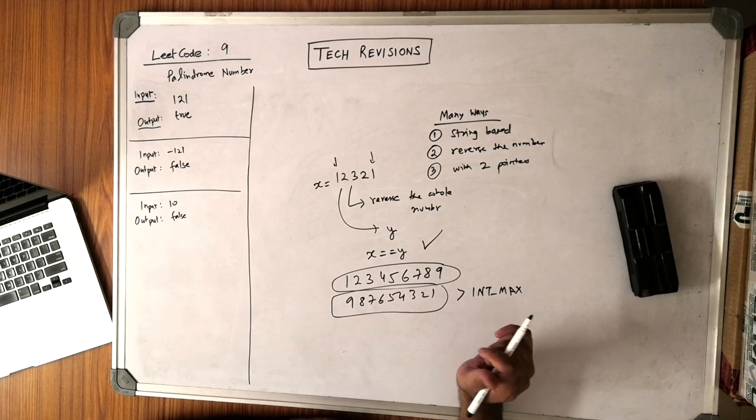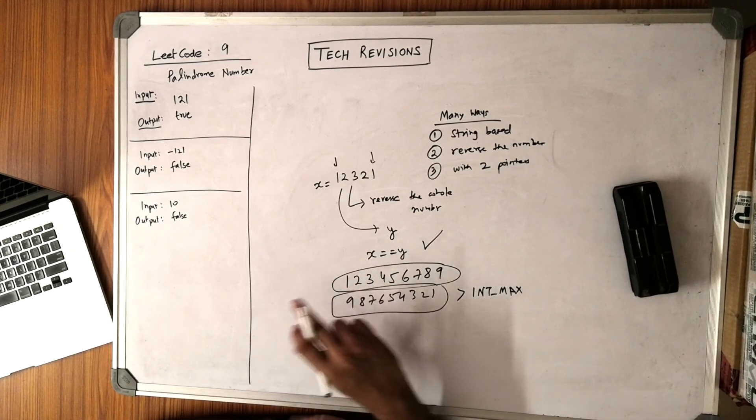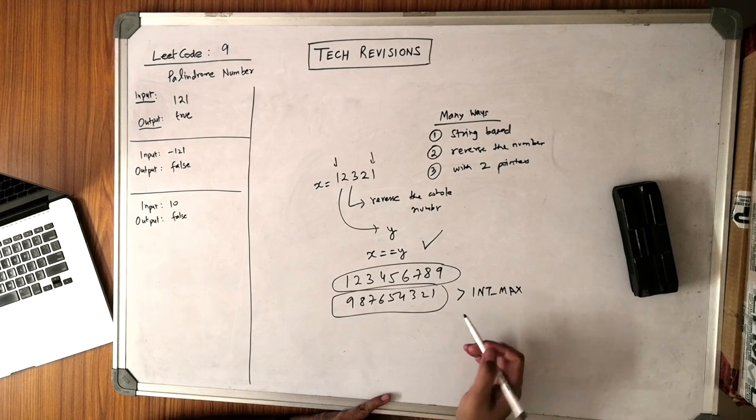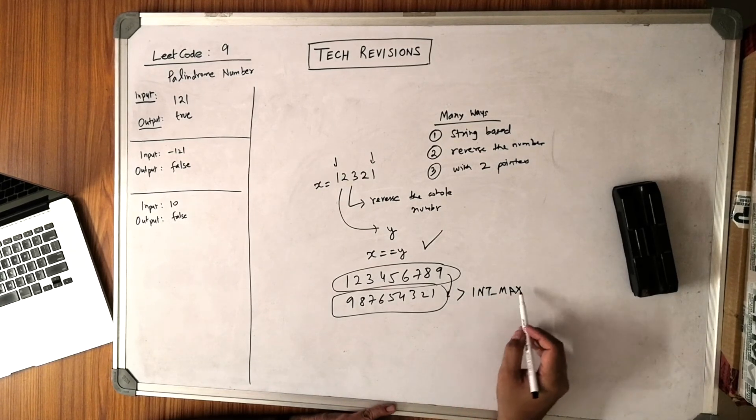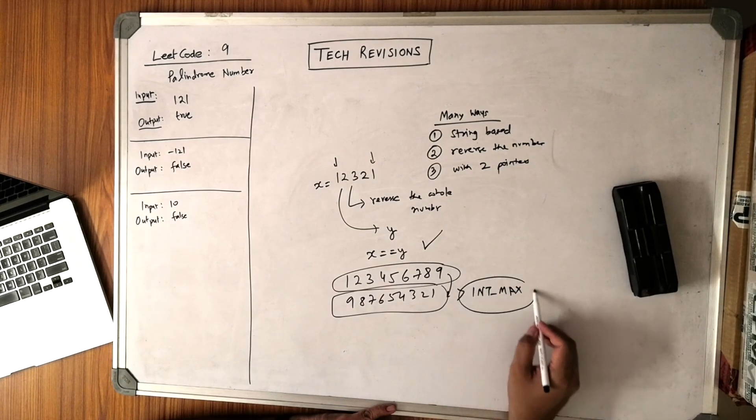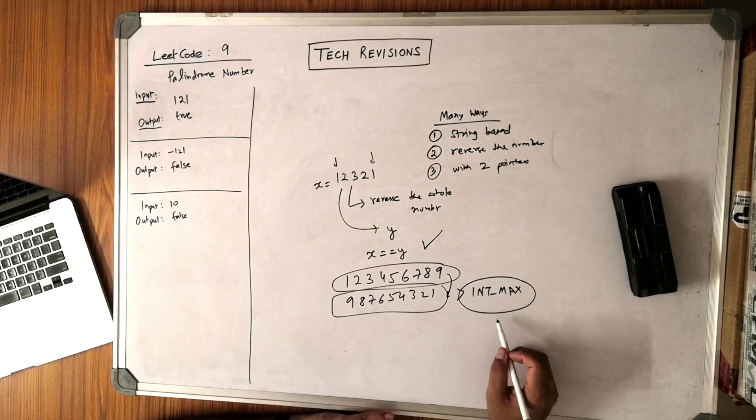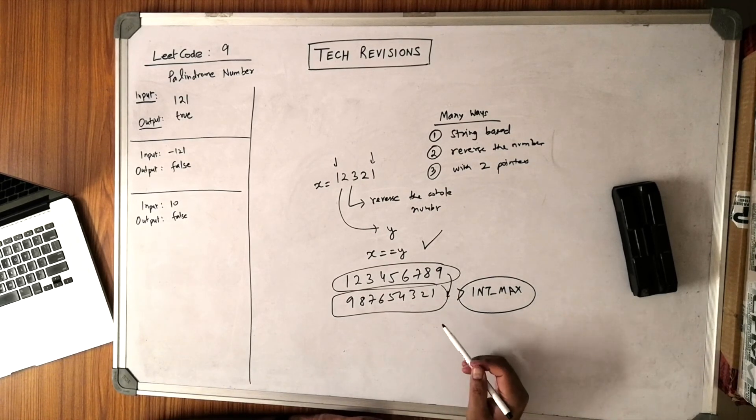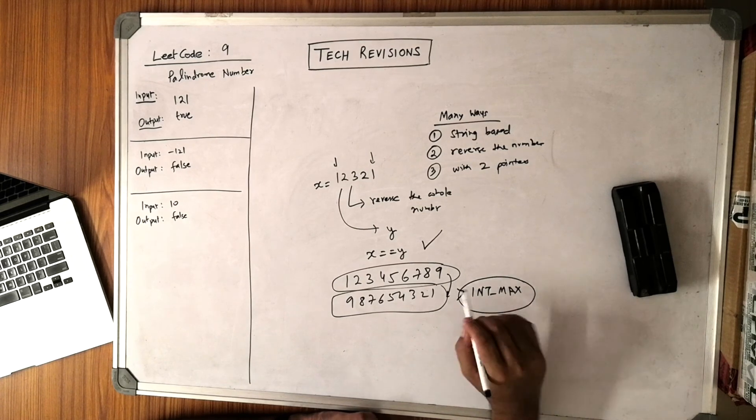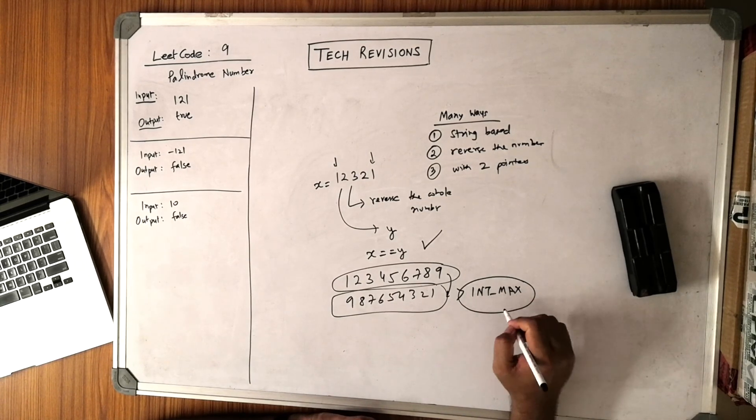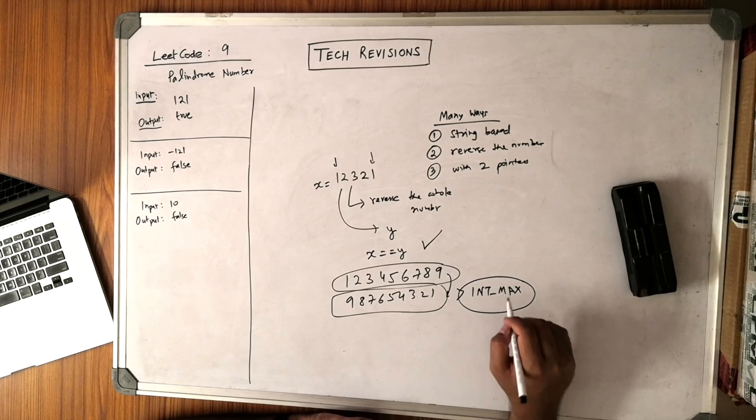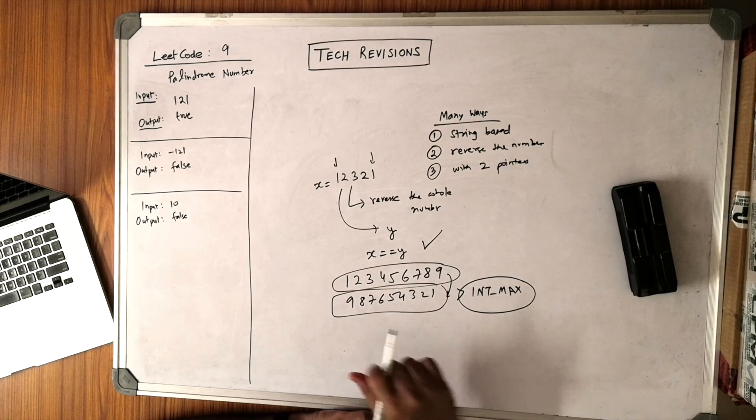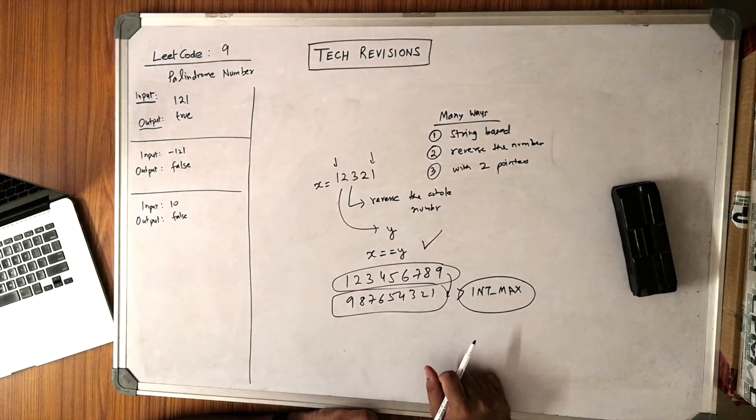There is another problem in LeetCode which is called Reverse a Number, and there we will look at how you can reverse a number while making sure that it is not going beyond int max. When you're reversing a number, you have to divide by 10 and then add the remainder and so on, and that operation can make a number go beyond integer max. How to make sure that doesn't happen is something we'll cover in the other episode, and I'll make sure that I'll put the link in the description for that. Okay, thank you.